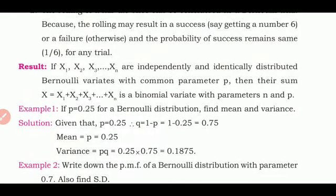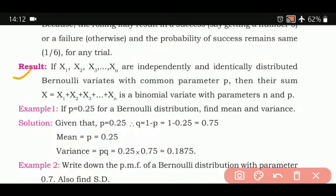If x1, x2, x3, ..., xn are independently and identically distributed Bernoulli variates with common parameter p, then their sum X = x1 + x2 + ... + xn is a binomial variate with parameters n and p. This is the most beautiful part: Bernoulli changes to binomial under certain conditions — for instance, instead of tossing one coin, if you toss three coins, the Bernoulli distribution becomes binomial. Similarly, following certain rules, binomial changes to Poisson, and Poisson to hypergeometric.